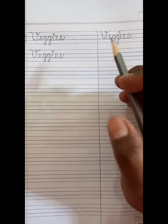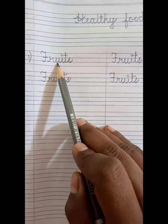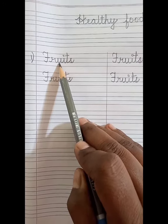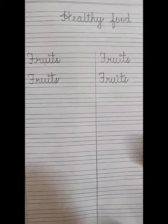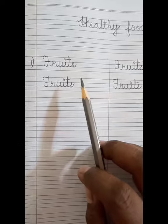In today's session, we learned two spellings. That is the spelling of veggies and the spelling of fruits. Read these spellings and let's meet in another session with new spellings. Thank you.